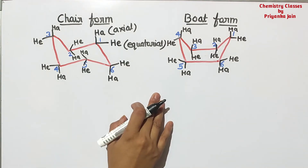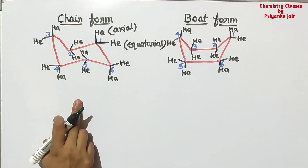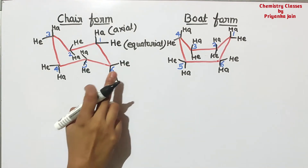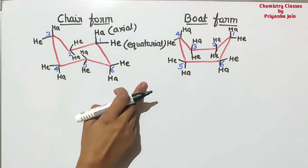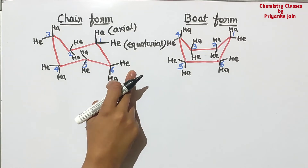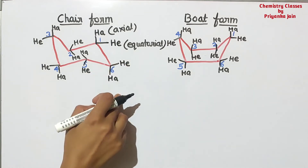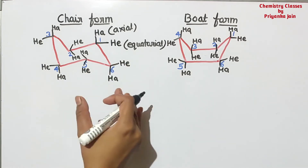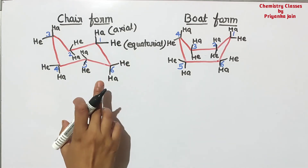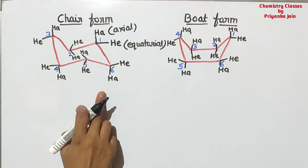All carbon atoms will have two types of hydrogen: one in the plane, called equatorial, and another that is above or below the plane, called the axial hydrogen.